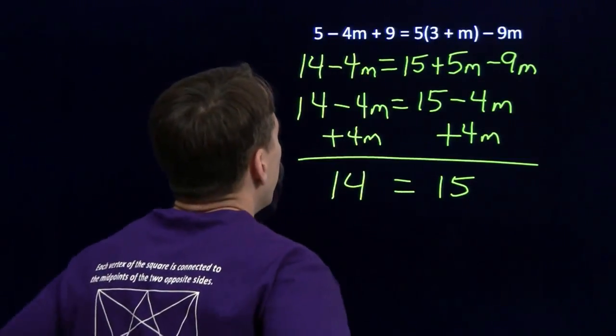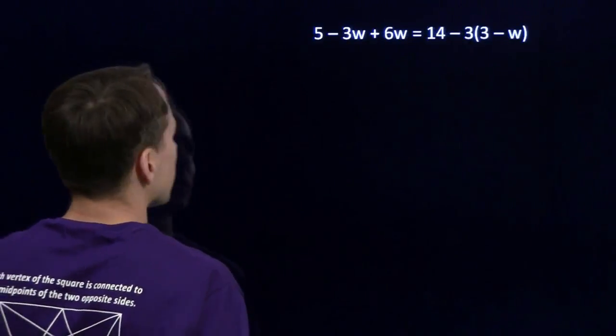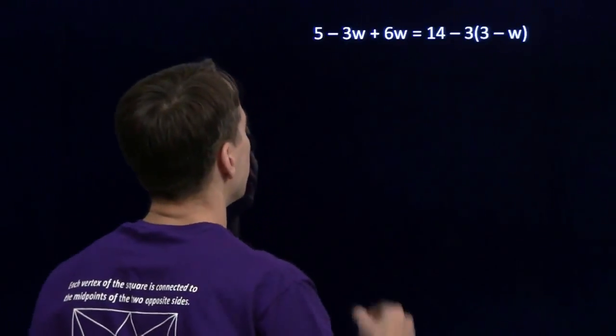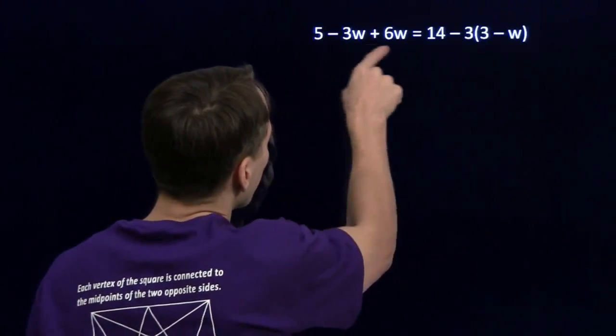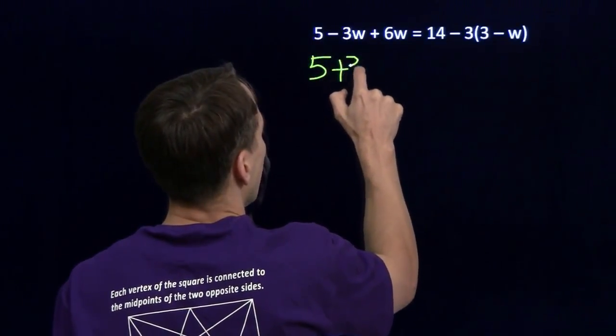Very tricky. All right. Well, that one tripped us up, but let's try a different one. Maybe we'll do better with this. Again, we know the drill here, we'll simplify both sides and try to isolate the variable. Over here on the left, we'll combine the minus 3w and the plus 6w, and that'll give us plus 3w.